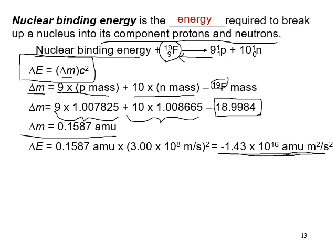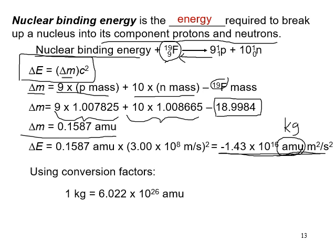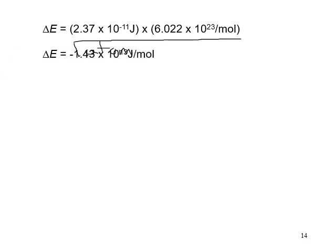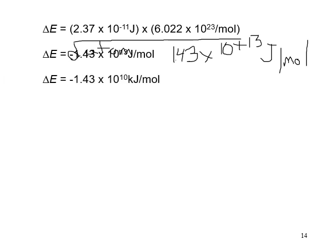After converting to joules using the amu-to-kilogram conversion factor, you get the nuclear binding energy for fluorine-19 for one atom. Multiplying by Avogadro's number puts it on a per-mole basis, giving 1.43 × 10¹⁰ kilojoules per mole — a very large number. The negative sign in the intermediate calculation just means the system loses energy during the process.